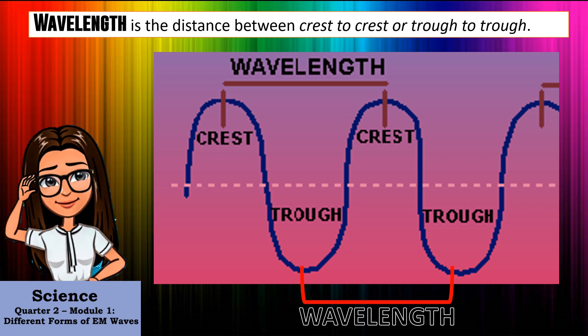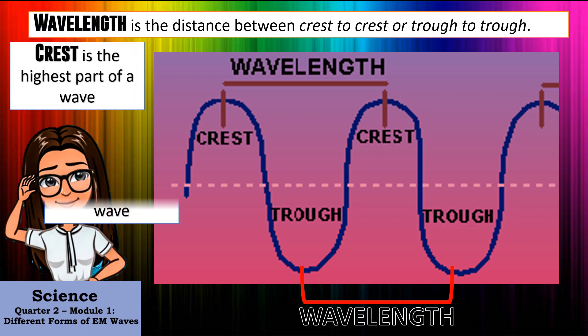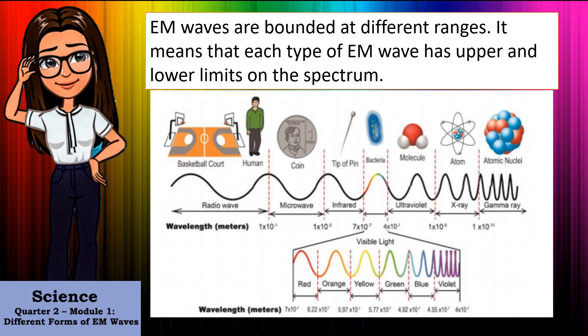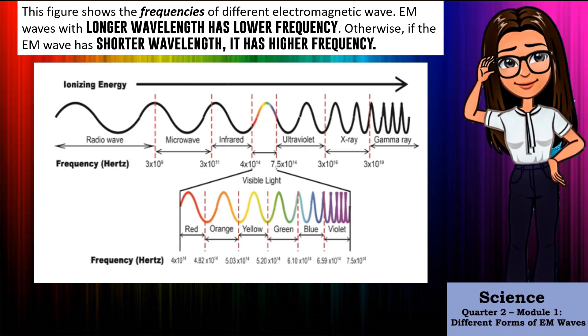Electromagnetic wavelength is the distance between crest to crest or trough to trough. The crest is the highest surface part of a wave and the trough is the lowest part. EM waves are bounded at different ranges, meaning each type of EM wave has upper and lower limits on the spectrum. This figure shows the frequencies of different electromagnetic waves. EM waves with longer wavelength have lower frequency, while EM waves with shorter wavelength have higher frequency.